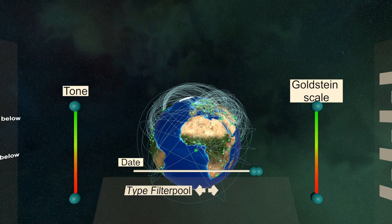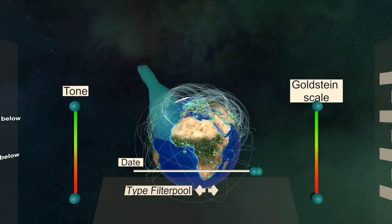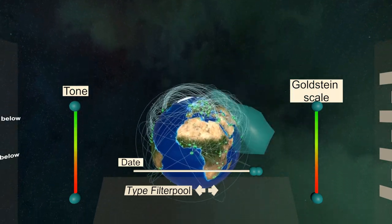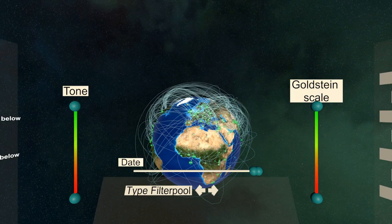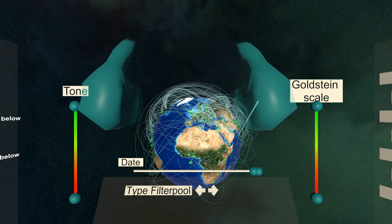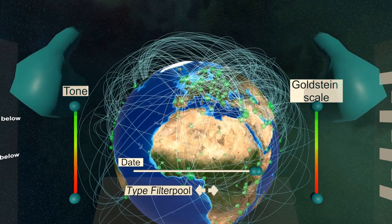Controls are similar to navigating a map on your smartphone. By holding one button and moving your hand, you can rotate the globe in front of you. Pressing and holding both trigger buttons and moving your hands apart or together will scale the globe up or down.